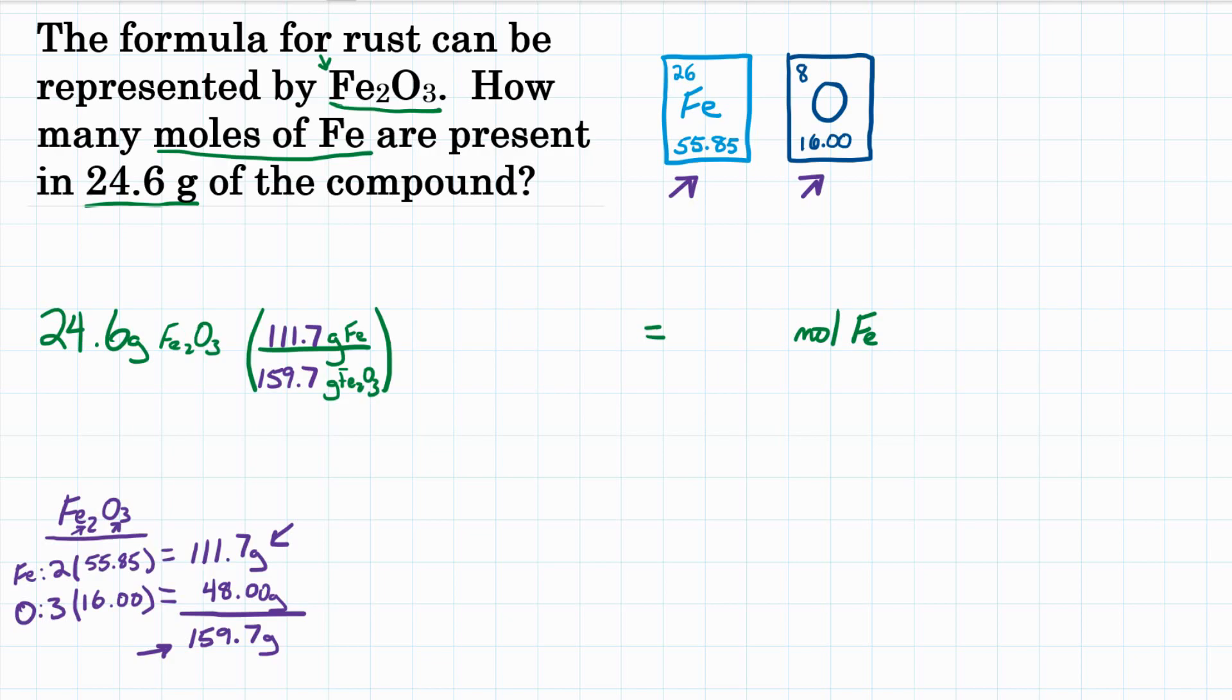So 111.7 grams of iron is in 159.7 grams of rust, of iron oxide Fe2O3. It's about 70%, so we're essentially multiplying here 24.6 grams by 70% to get iron, and then canceling out our units. Grams of Fe2O3 would be gone. Okay, now we have just grams of iron, but they want moles.